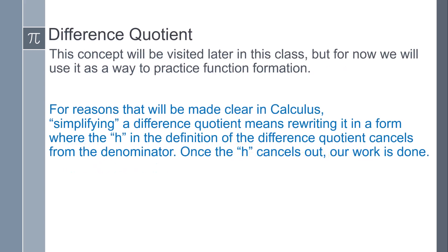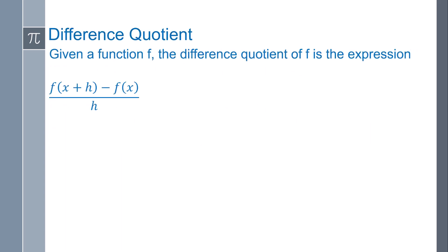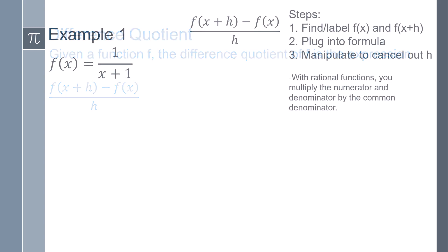As a reminder, in the difference quotient we want to cancel out that h in the denominator. This is the difference quotient. With a rational function, how do we know it's rational? We're dividing by x. The general strategy is the same.